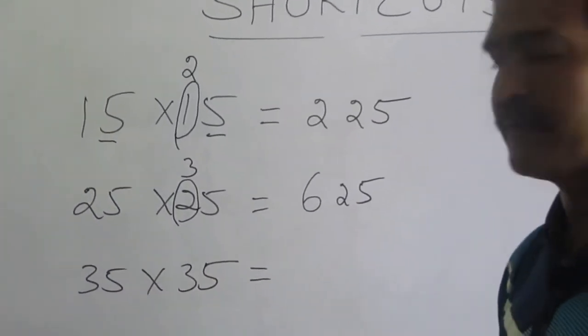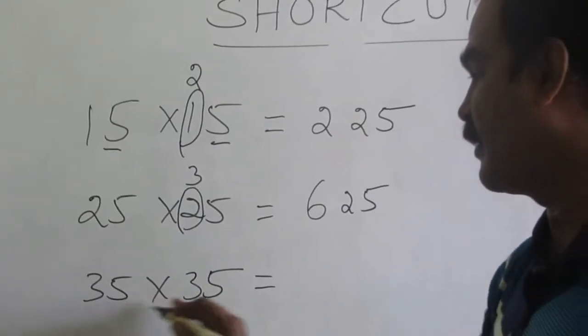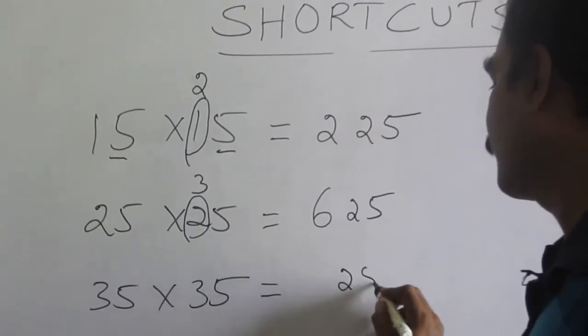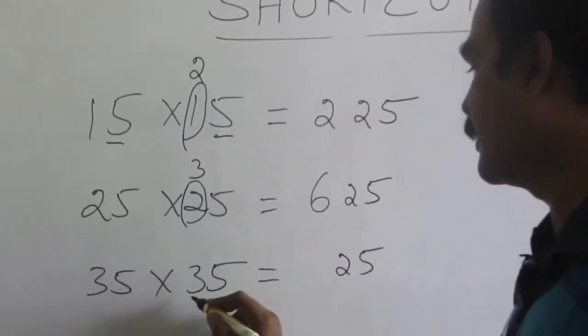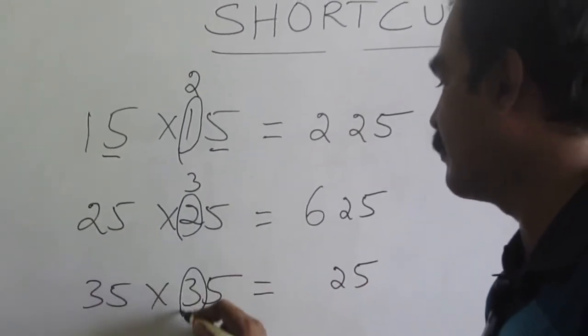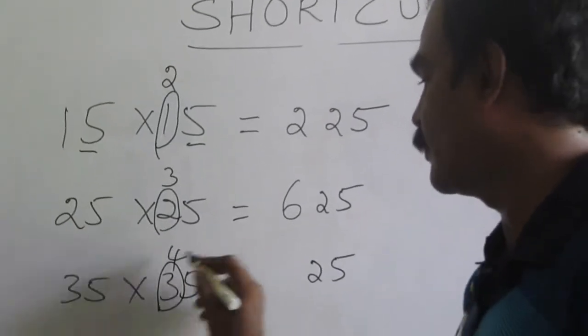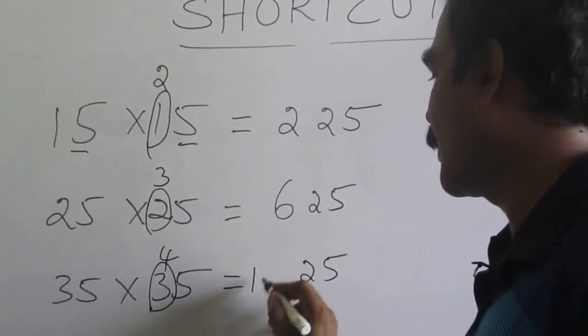What is 35 times 35? The ending digits give 25. Just increase one number here: 3 times 4 is 12. So the answer is 1225.